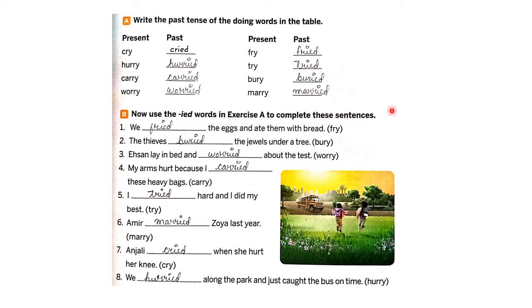Now use the -ied words from Exercise A to complete the sentences. Number one: we ___ the eggs and ate them with bread — 'fry,' so we write 'fried.' Number two: the thieves ___ the jewels under a tree — 'bury,' so we write 'buried.' Number three: Ishan lay in bed and ___ about the test — 'worry,' so we write 'worried.' Number four: my arms hurt because I ___ these heavy bags — 'carry,' so we write 'carried.' Number five: I ___ hard and I did my best — 'try,' so we write 'tried.' Number six: Amir ___ Joya last year — 'marry,' so we write 'married.' Number seven: Anjali ___ when she hurt her knee — 'cry,' so we write 'cried.'